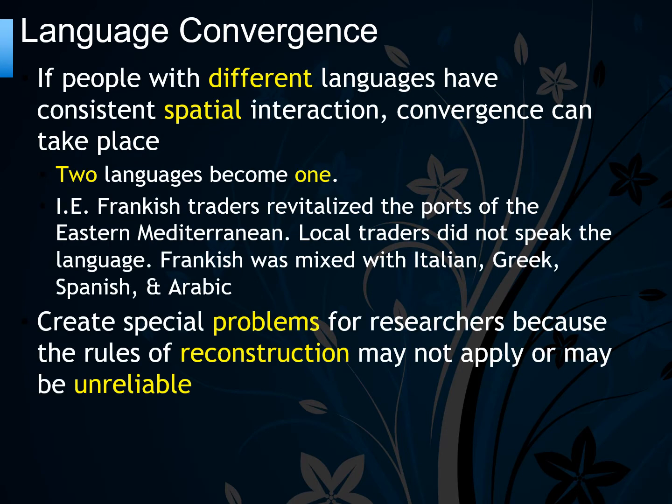Language convergence occurs when people with different languages have consistent spatial interaction — two languages can become one. For example, Frankish traders revitalized the ports of the eastern Mediterranean, but local traders did not speak the language.